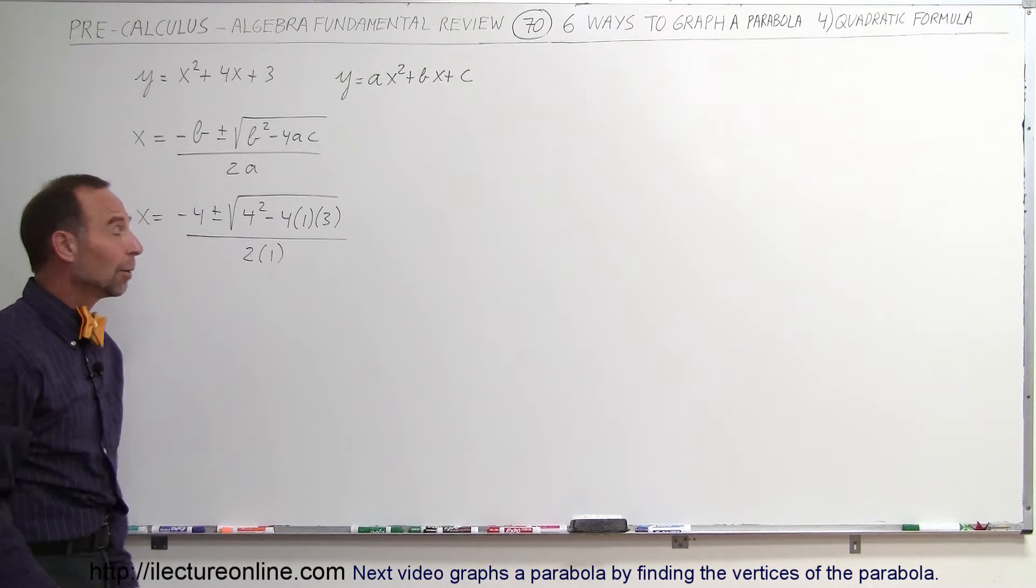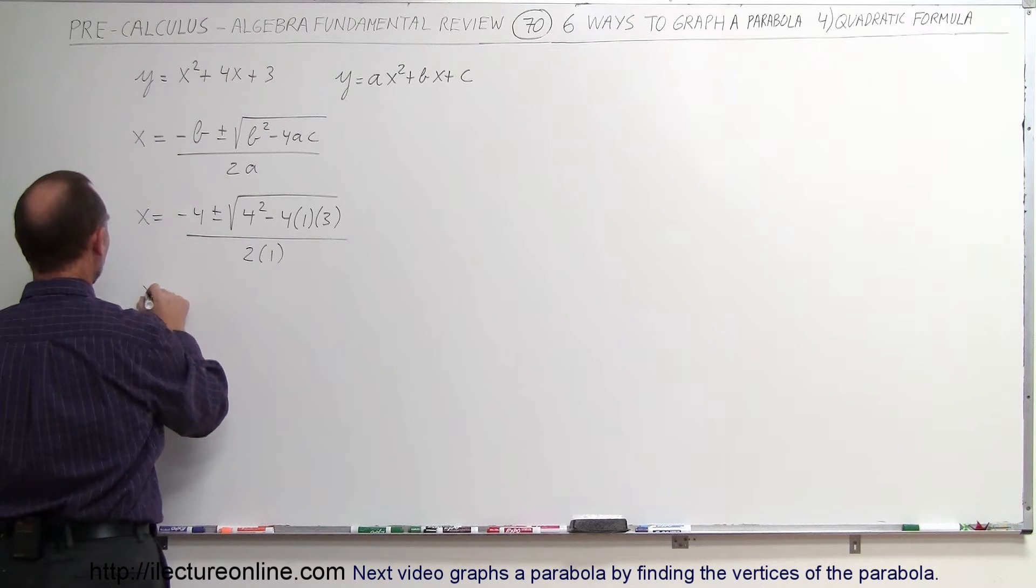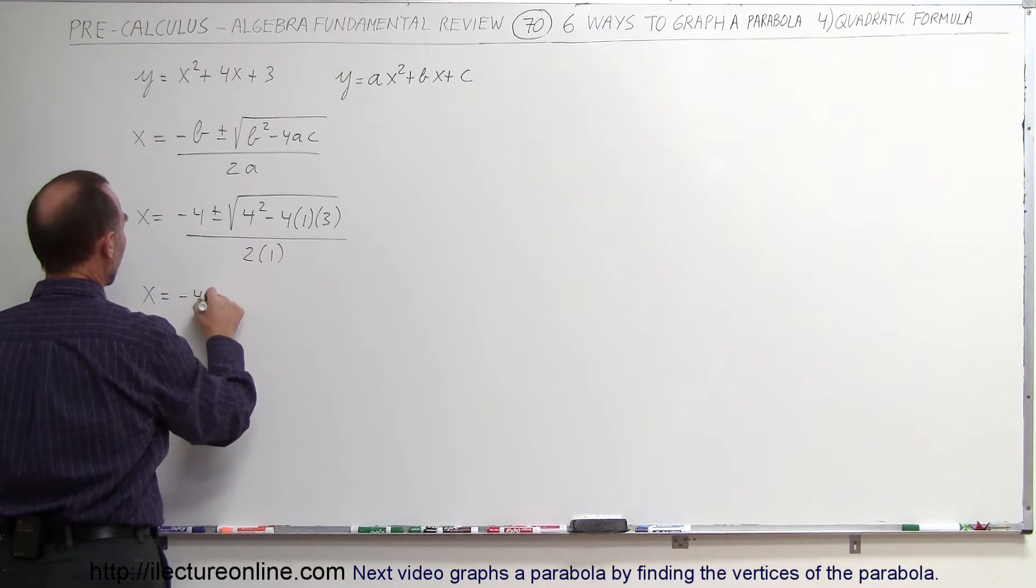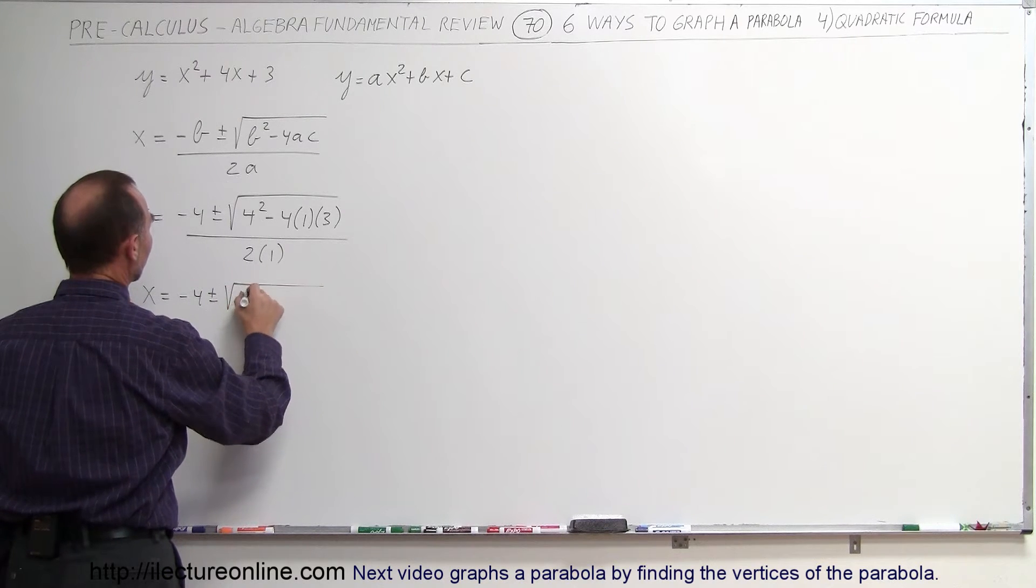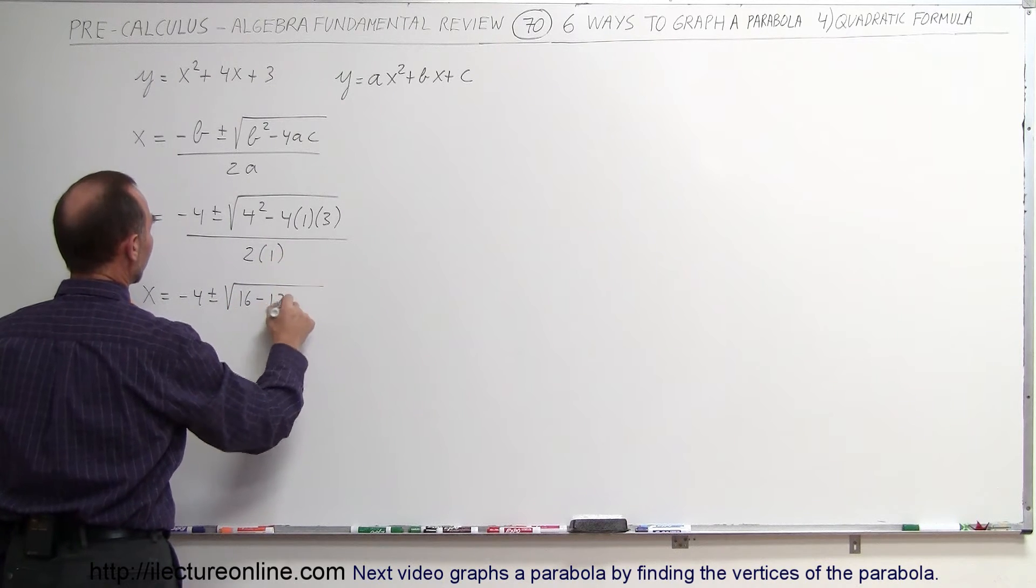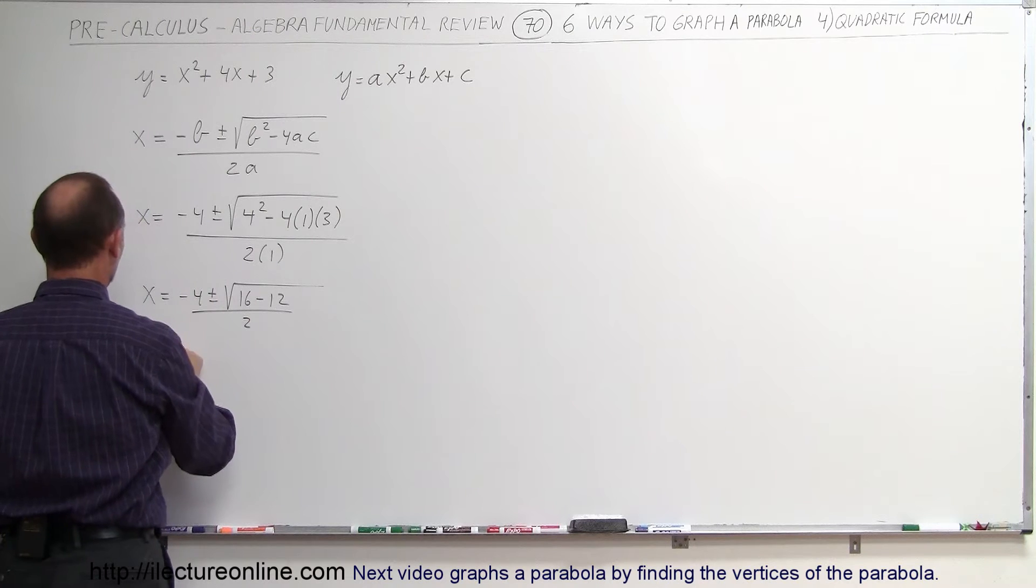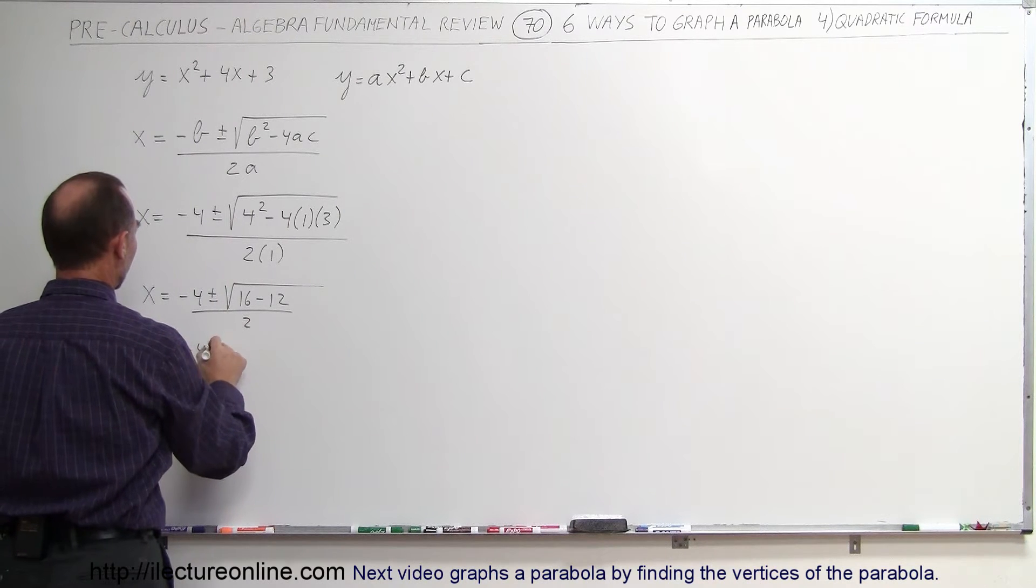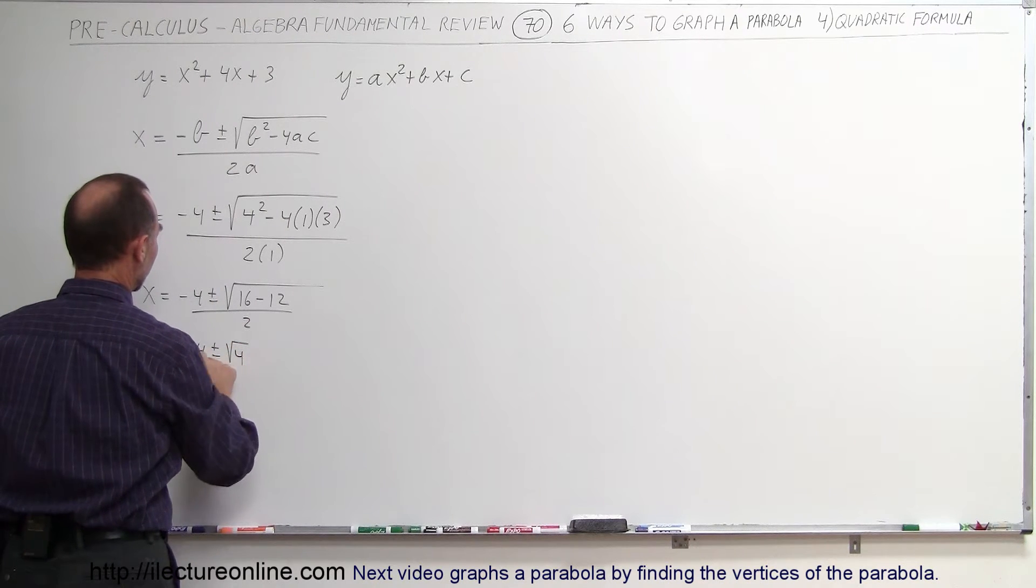Now, all we have to do is simplify this and see what we get. So x is equal to minus 4 plus or minus the square root of, this is 16 minus 12, divided by 2. So x is equal to minus 4 plus or minus the square root of 4, divided by 2.